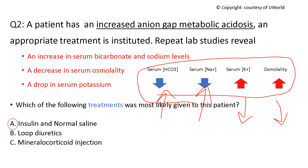You might ask: mineralocorticoids can decrease serum potassium. However, mineralocorticoids would increase sodium reabsorption, so they would actually increase rather than decrease serum osmolality — so that's irrelevant. Loop diuretics would decrease serum potassium, that's true. However, they are not usually used for treatment of any cause of high anion gap acidosis. The only type of high anion gap acidosis that leads to disturbances in these parameters requiring reversal is DKA.